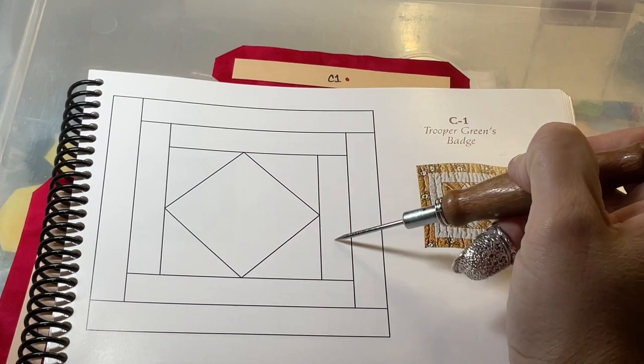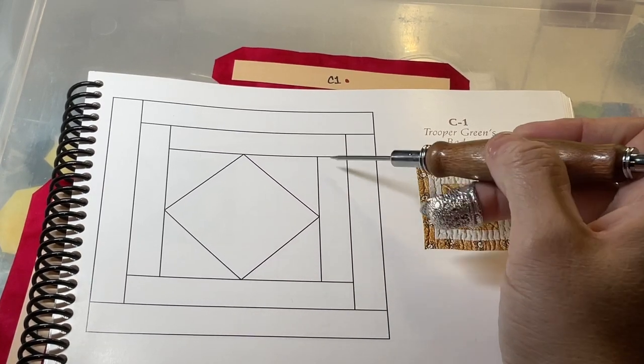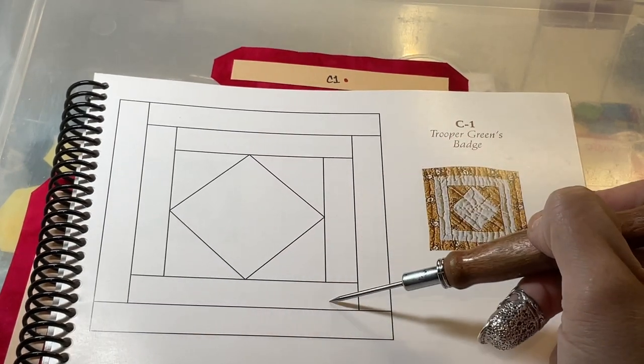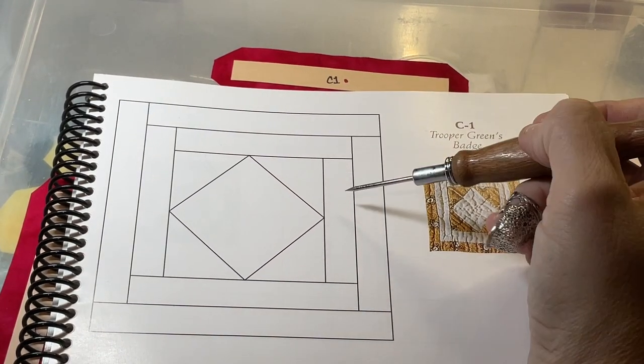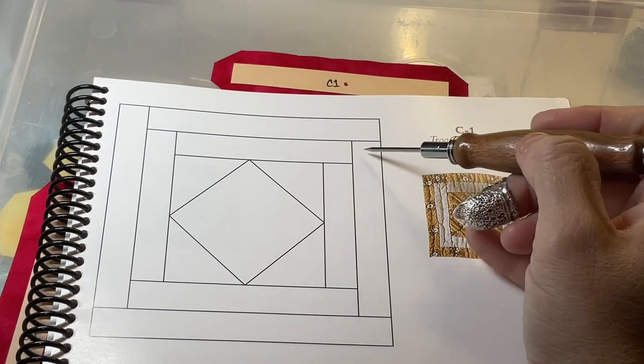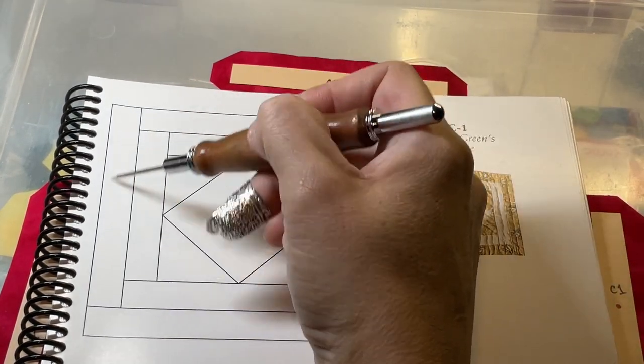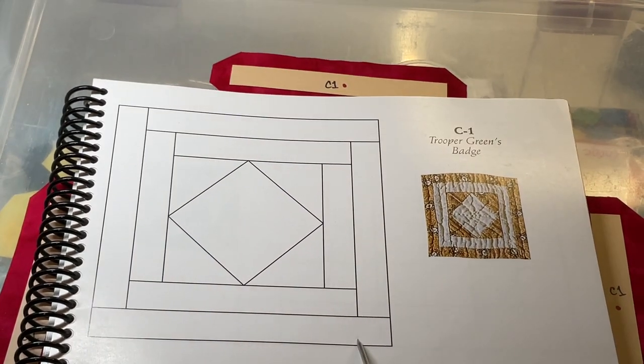After that, we're going to go to the shortest side, and then work our way around this way. This is the longest side is last, and that would be the background, and then the focus fabric on the outside, the shortest side, and work our way counterclockwise to finish with this one.